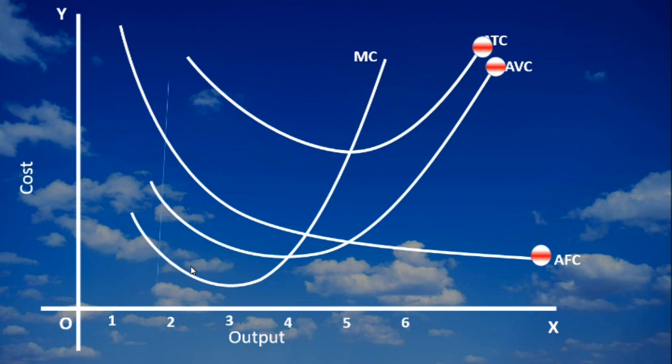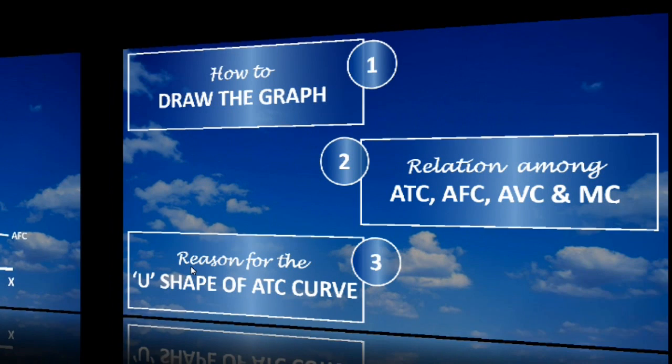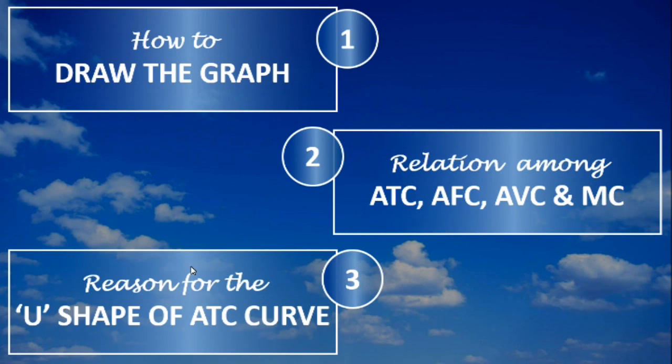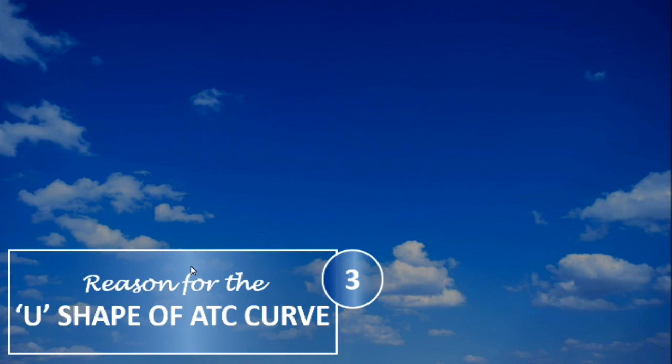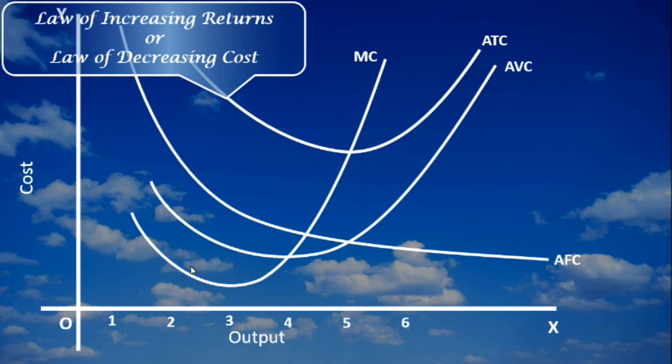Now, we shall look into the reasons for the U-shape of the average total cost curve. Apart from the relations, which are also reasons for the U-shape of the average total cost curve, we can include what is going to be stated now. To start with, the average total cost curve falls because of the operation of the Law of Increasing Returns or Law of Decreasing Cost.